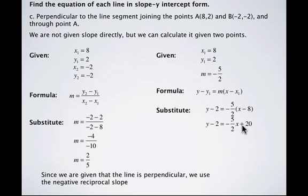Well, negative times a negative is a positive, and 5/2 times 8 is 20. So we're going to add 2 to both sides to find the equation of the line in slope y-intercept form.